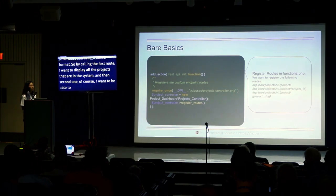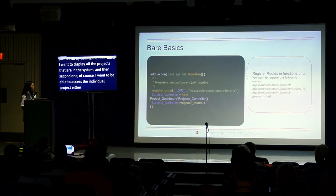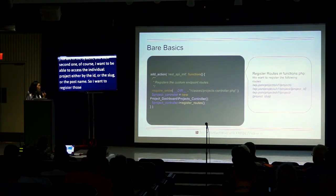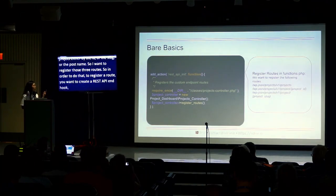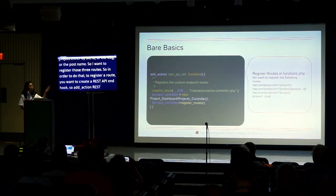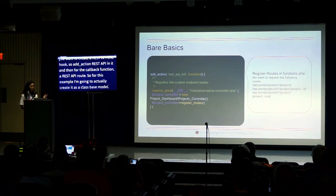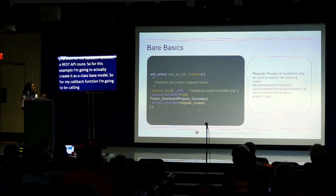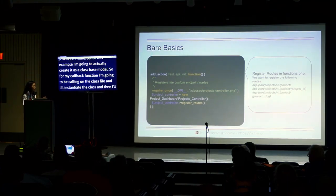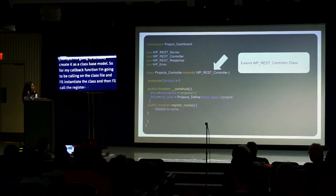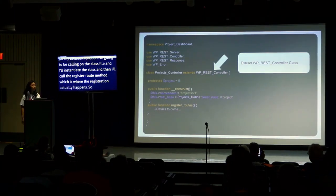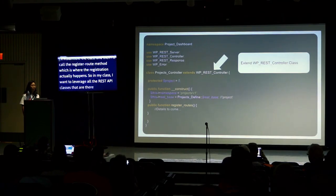The first route displays all projects in the system. The second route accesses an individual project by ID or slug. To register a route, you create a REST API init hook using add_action with 'rest_api_init'. On the callback function, I'm using a class-based model — I'll instantiate the class and call the register route method where the registration is handled.